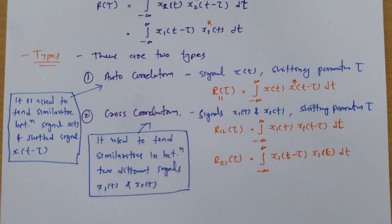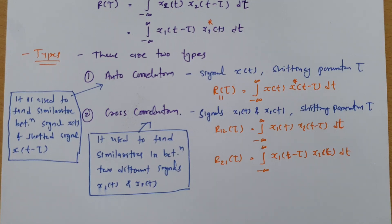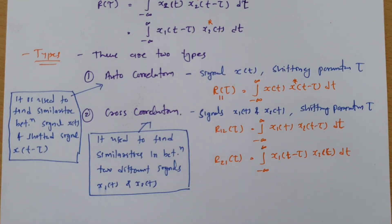This is all about the correlation function. I hope you have understood this. In the next session, I will explain autocorrelation of energy signals, and then we will see properties of autocorrelation for energy signals, with each property derived with proof. Stay tuned with this channel and please give your valuable suggestions. Thank you so much for watching.